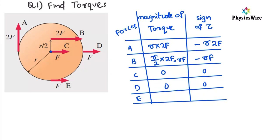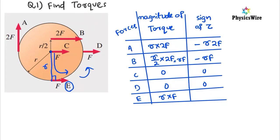For force E, draw a line perpendicular to the force. The distance is r, so your torque is r times F. Starting from the fixed point and moving towards the right, this is an anticlockwise rotation, so the torque is positive: plus r times F.